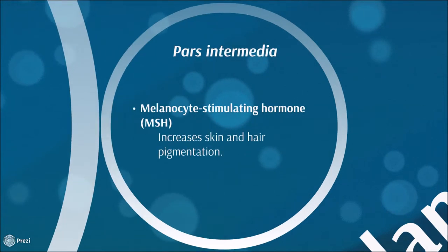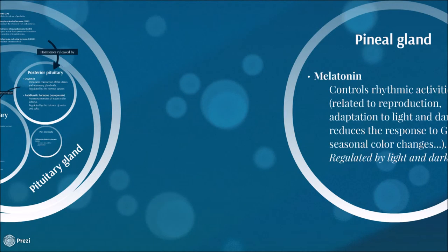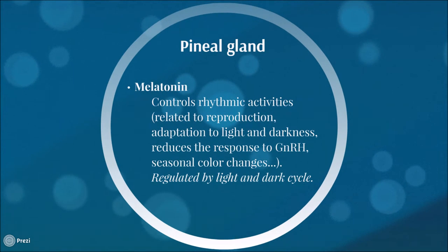The pars intermedia secretes melanocyte-stimulating hormone (MSH), which increases skin and hair pigmentation. We also have the pineal gland, which is in charge of producing melatonin. Melatonin is an amine involved in rhythmic activities that could be daily or seasonal, such as adaptation to darkness or seasonal color changes. It is also important in some reproductive functions as it reduces the response to gonadotropin-releasing hormone, and it is regulated by light and dark cycles.